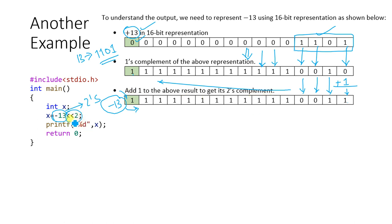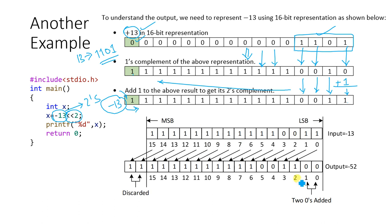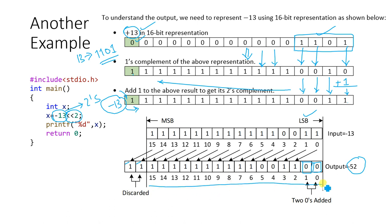Now we shift the two's complement representation of minus 13 two bits towards the left. I draw two boxes outside the boundary on the left — MSB (most significant bit) side — and shift all values two positions left. The two empty boxes on the right are filled with zeros. When you convert this resulting binary value to its decimal equivalent, you find it represents minus 52. So this program gives minus 52 as the answer.